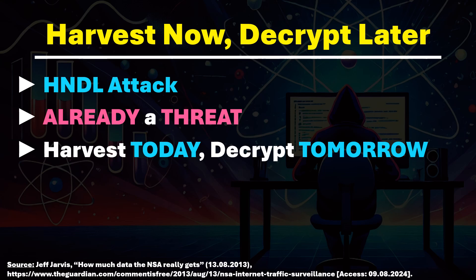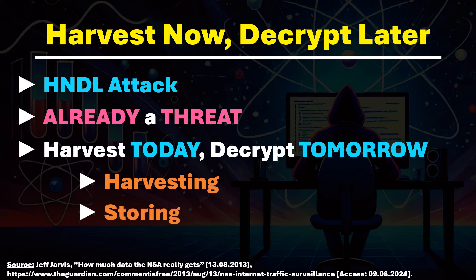The attack unfolds in three stages. First, harvesting: the attacker collects and stores encrypted communication data today. These encryptions typically rely on asymmetric encryption methods like RSA. If a complete session, including the public key exchange, is recorded, it can be decrypted later by decrypting the RSA private keys. Second, storing: since these methods are currently considered secure and can only be broken with extreme computational effort by classical computers, the collected data remains safe for now. However, the attacker stores all captured encrypted data in the hope of decrypting it later.